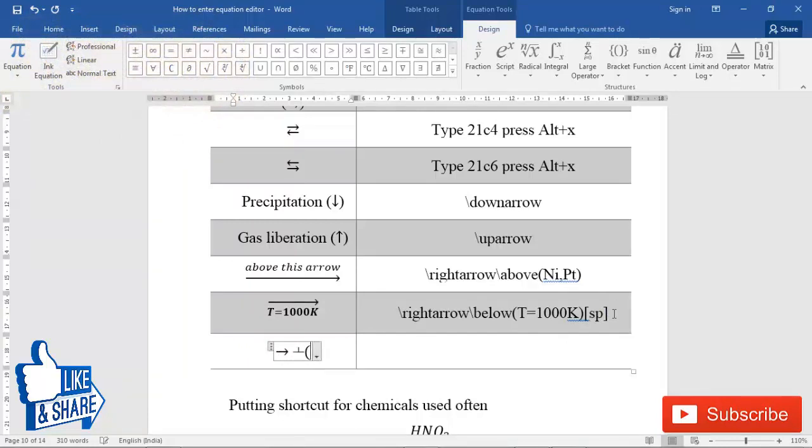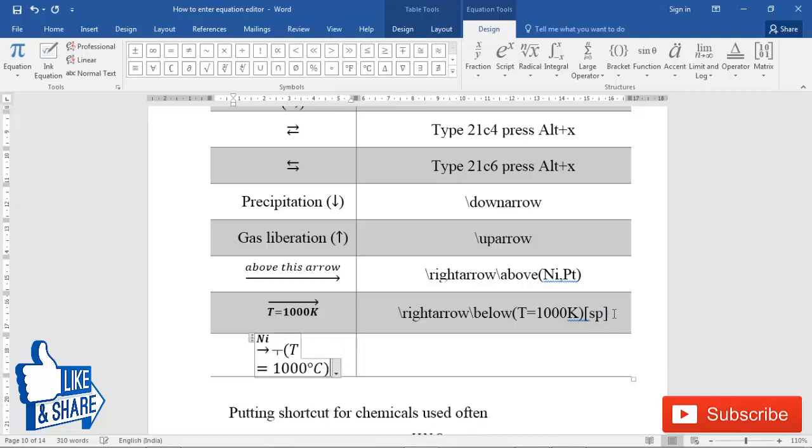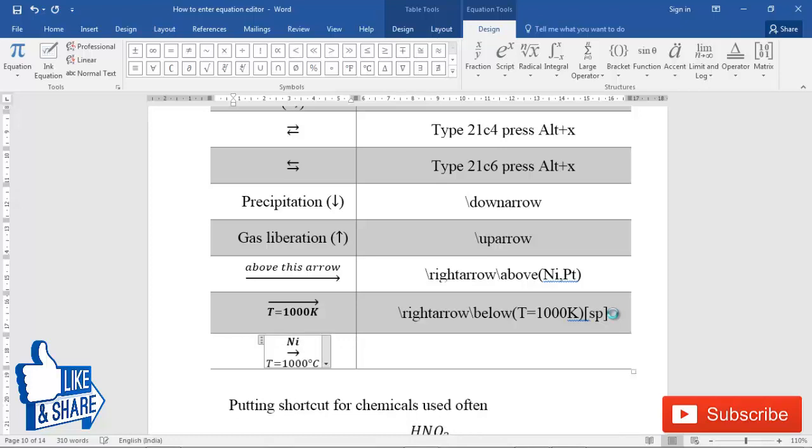This is above, what I have to type: Ni, and then press space. Then below, and then T=1000°C. This will come as below.